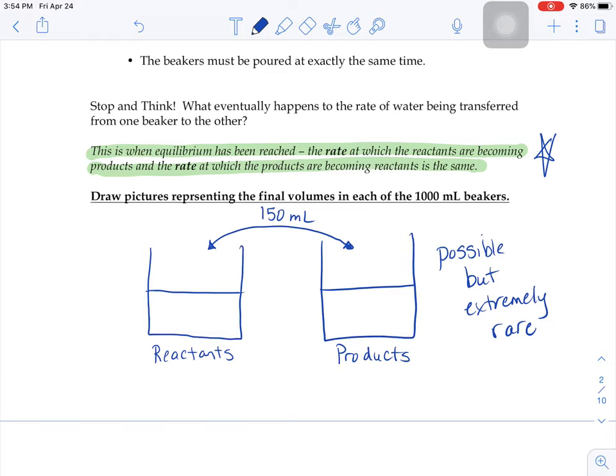So in other words, maybe 150 milliliters of water are in the small beaker that you're using to transfer back and forth. Maybe there's 150 milliliters turning from reactants into products or products into reactants. And you could sit there all day and keep passing water back and forth, but that amount of water that's going back and forth from one beaker to the other isn't changing. That's equilibrium.